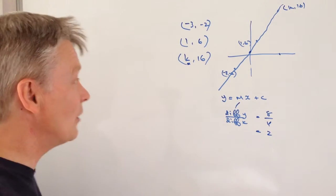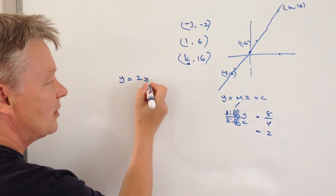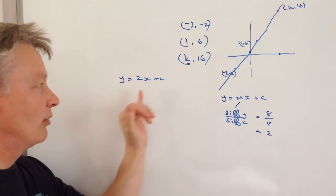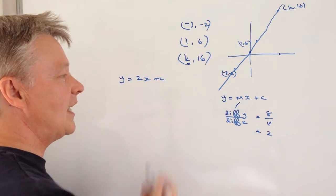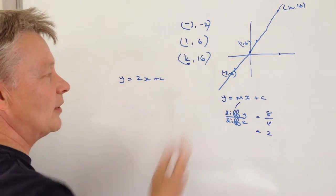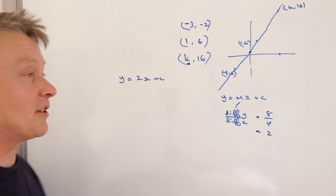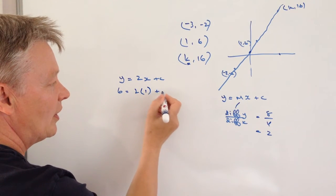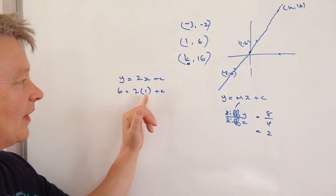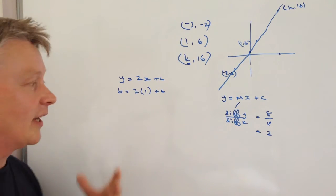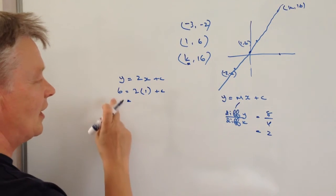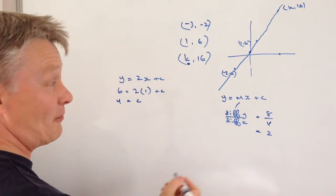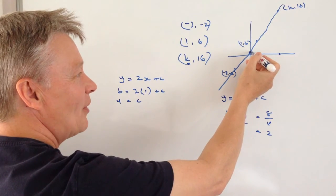Therefore, I can write my equation of the line as Y = 2X + C. Then it's a matter of taking one of these sets of values and plugging it into this equation to work out the intercept. I'll take the second one because it's easier to deal with positive numbers. When Y = 6, X = 1, so 6 = 2(1) + C. Therefore 6 = 2 + C, so C = 4.